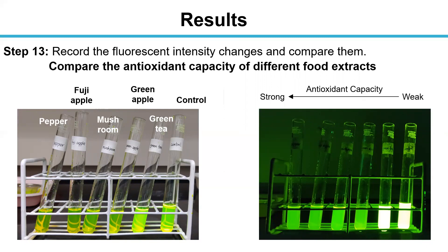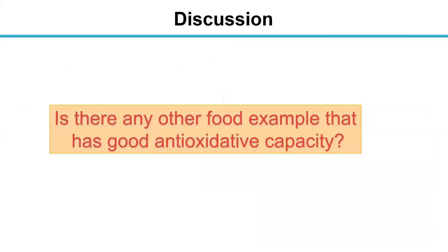As a result, we found that pepper has the strongest antioxidant capacity and green tea has the weakest capacity. This is all about our experiment. We also leave a question for you: is there any other food example that has good antioxidant capacity? Thank you.